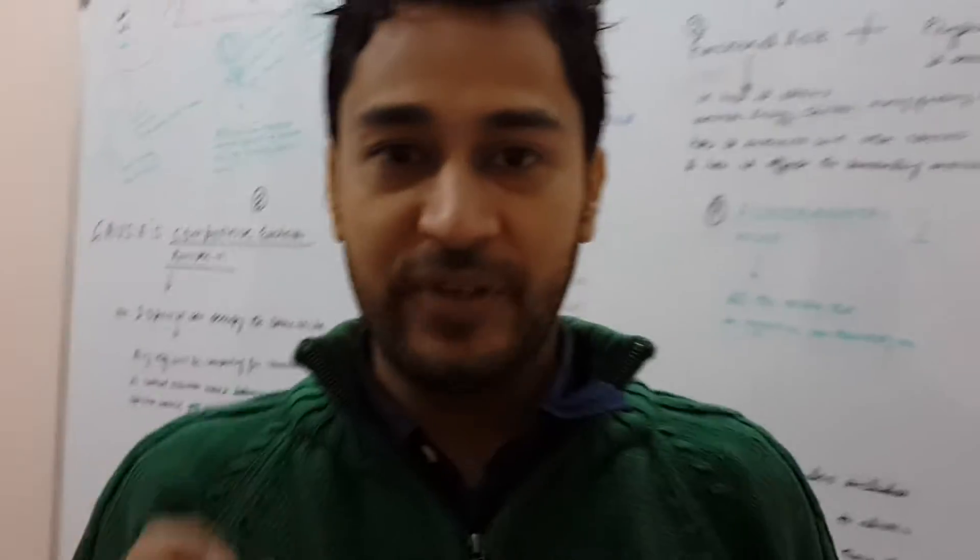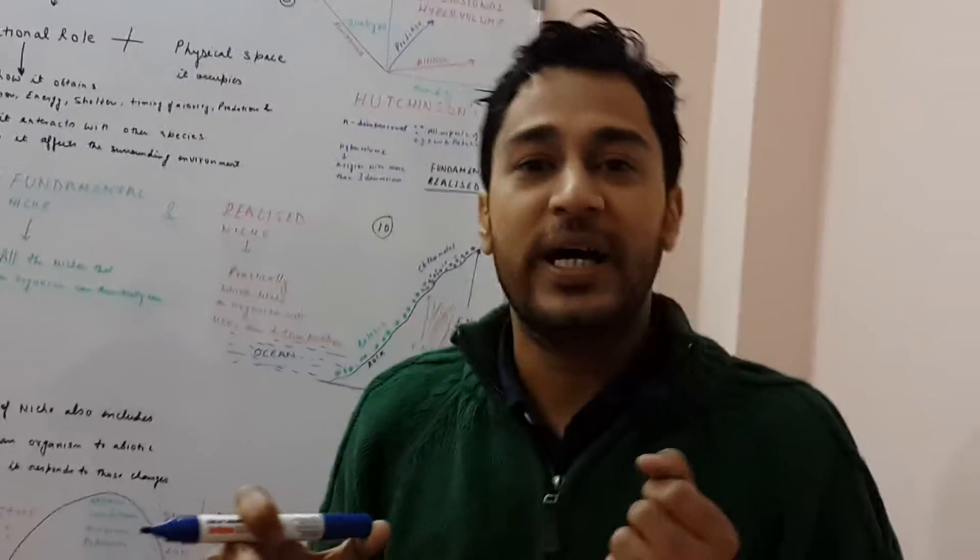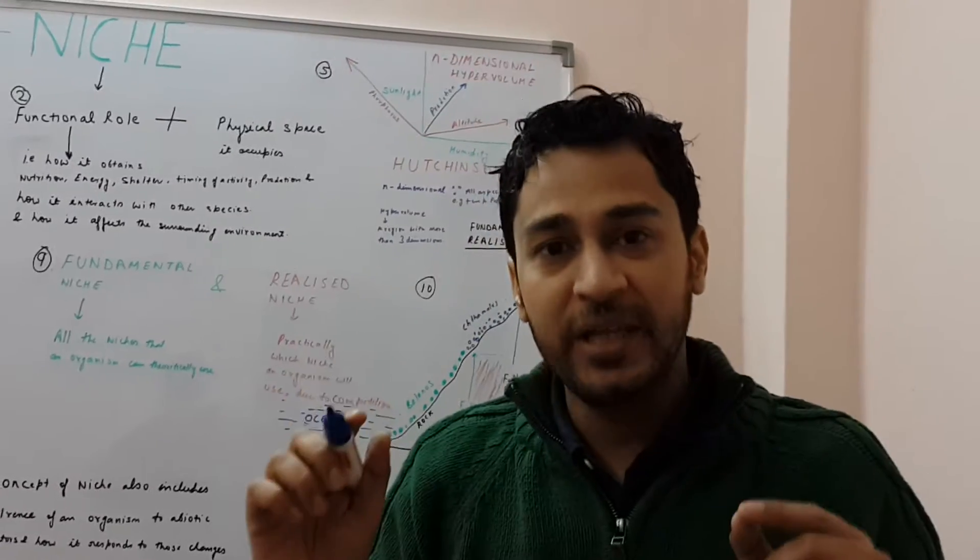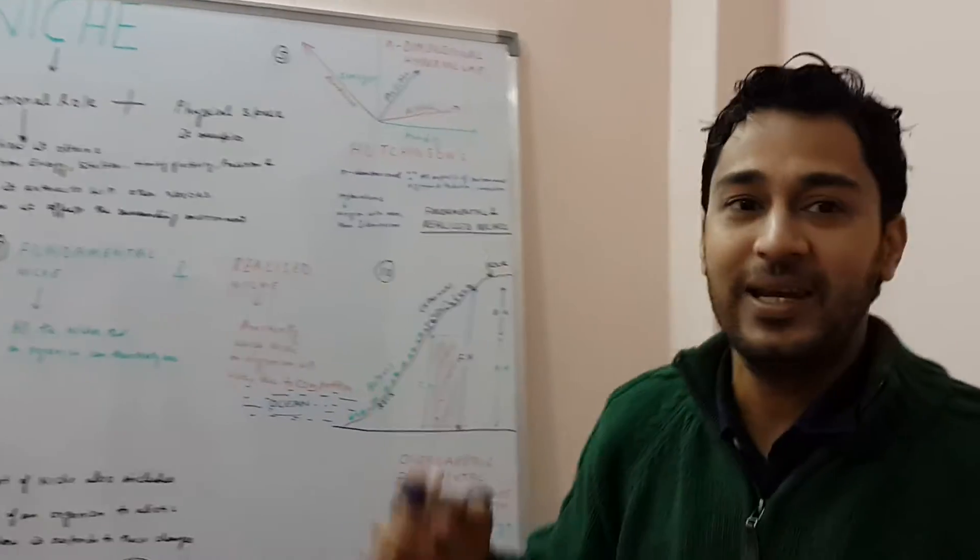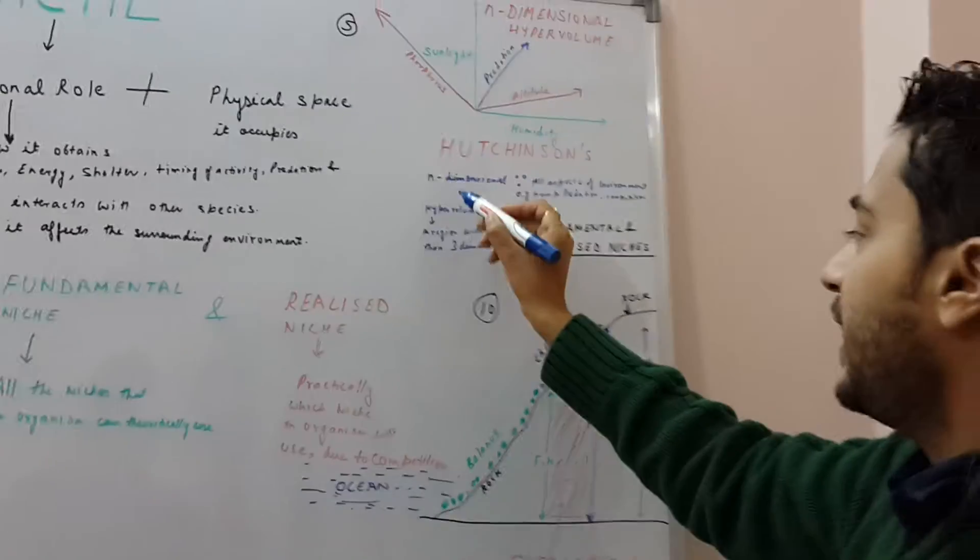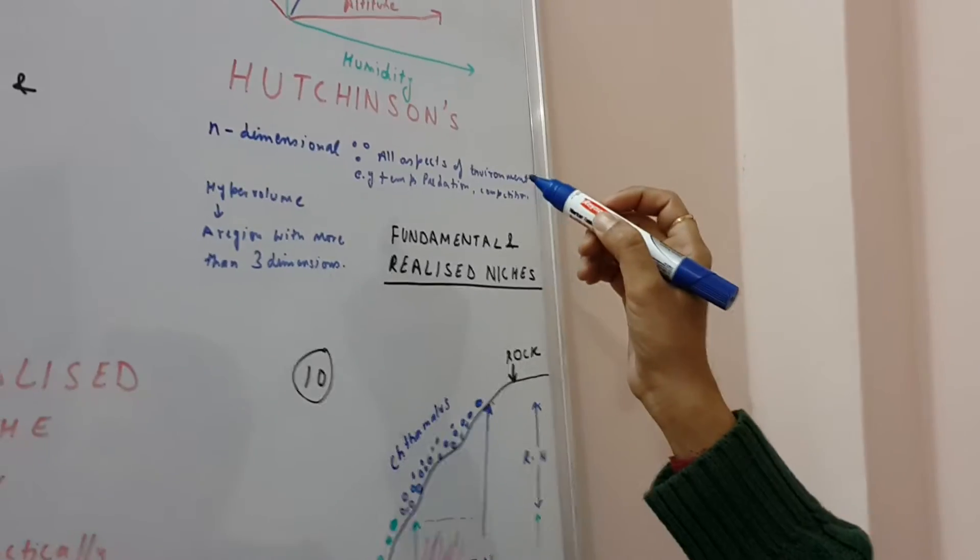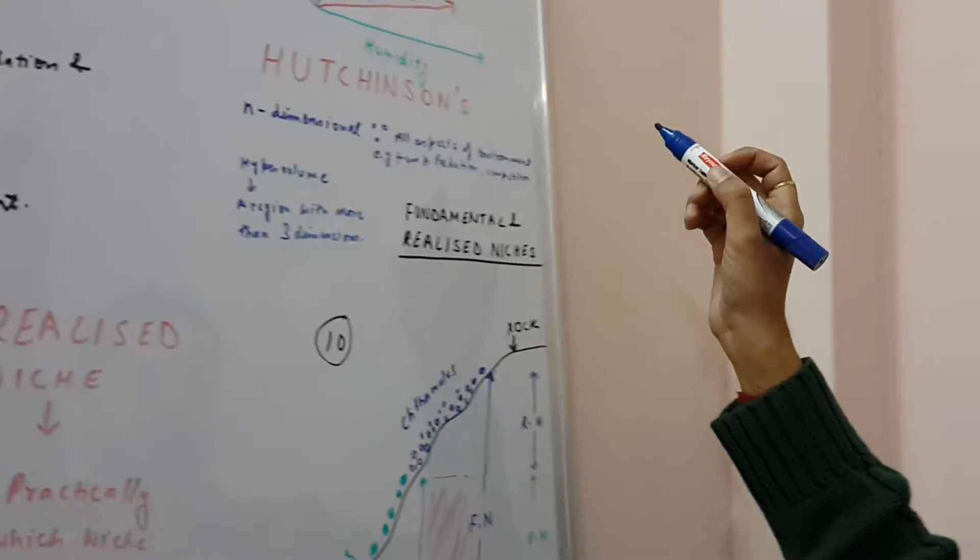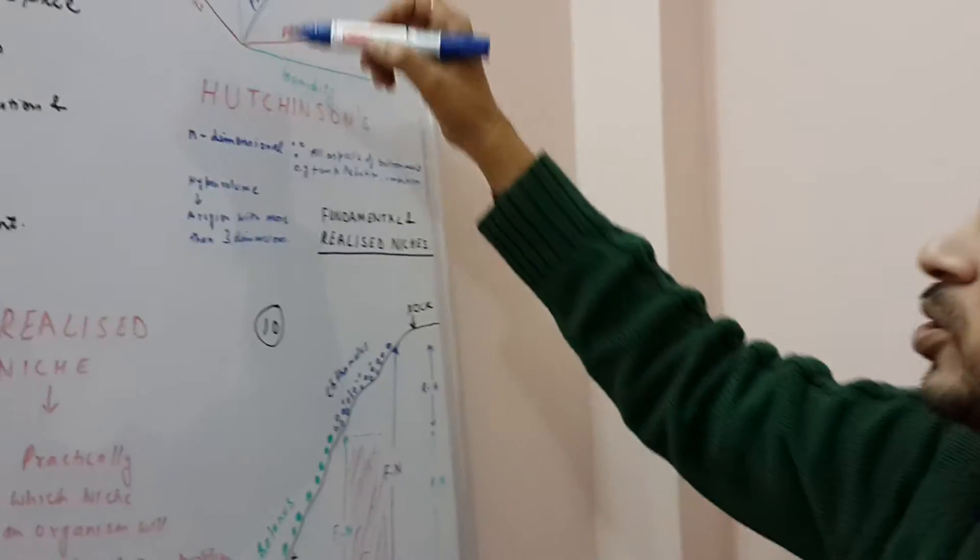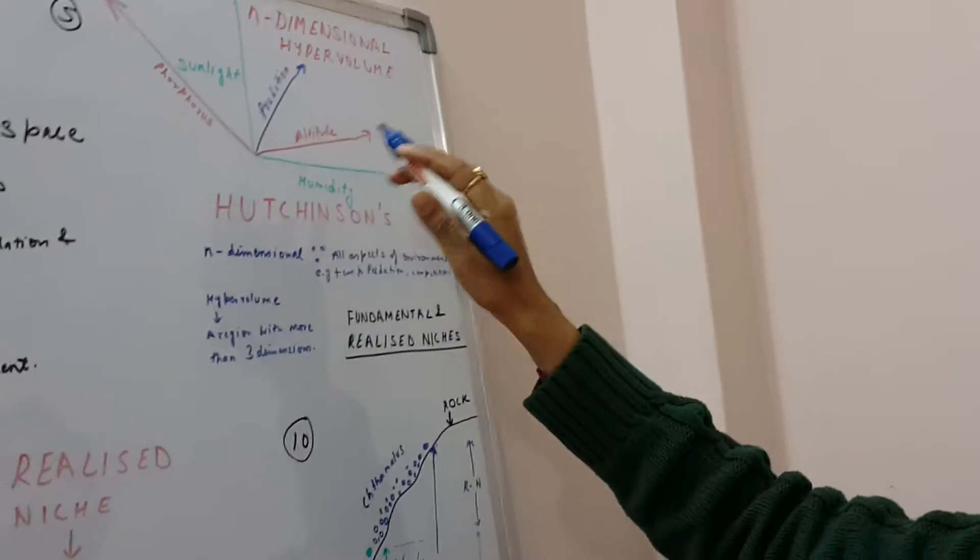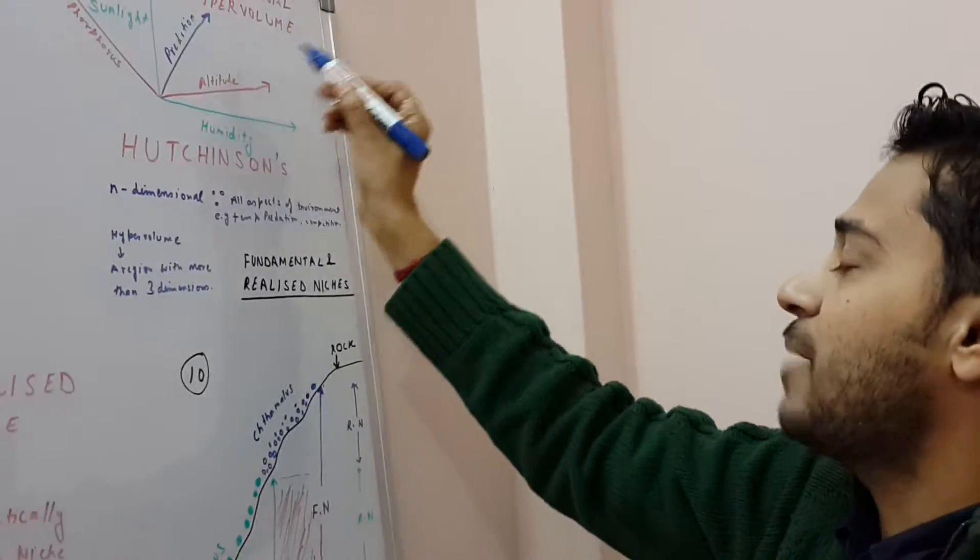Now, a very important definition of niches was given by a person called Hutchinson. He called niches n-dimensional hypervolume. I know it sounds like a bombastic word. I'll simplify it. N-dimensional means all the aspects or the dimensions of the environment like temperature, precipitation, competition, predation. I have tried to draw it on the board even though it is not possible to draw it because it's a two-dimensional figure and this is called n-dimensional hypervolume.